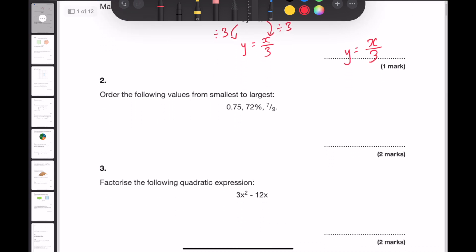For question 2, order the following values from smallest to largest. In order to be able to compare a decimal, a percentage, and a fraction, we need to write them in the same number type. So for instance, if I write each of these as a decimal,